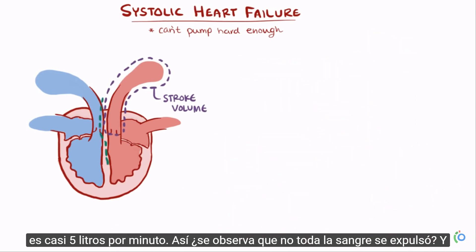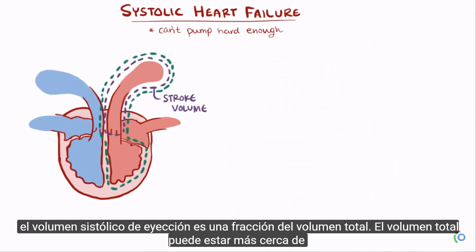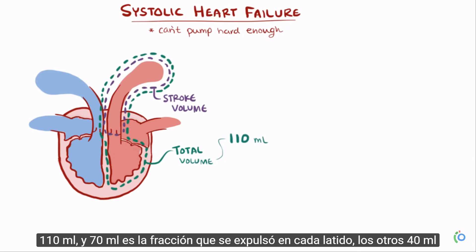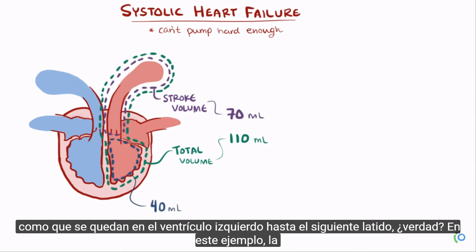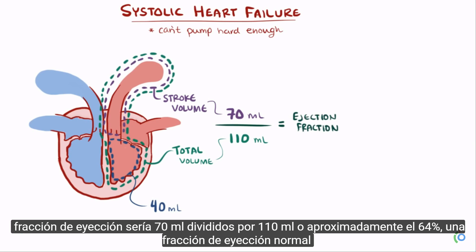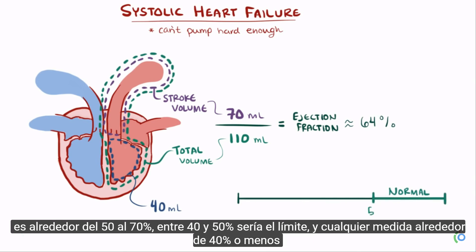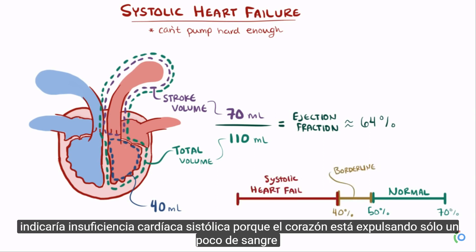Not all of the blood is pumped out — the stroke volume is only a fraction of the total volume. The total volume might be closer to 110 milliliters, and 70 milliliters is the fraction ejected with each beat, while the other 40 milliliters lingers in the left ventricle. The ejection fraction would be 70 divided by 110, or about 64%. A normal ejection fraction is around 50 to 70%; 40 to 50% is borderline, and 40% or less indicates systolic heart failure.